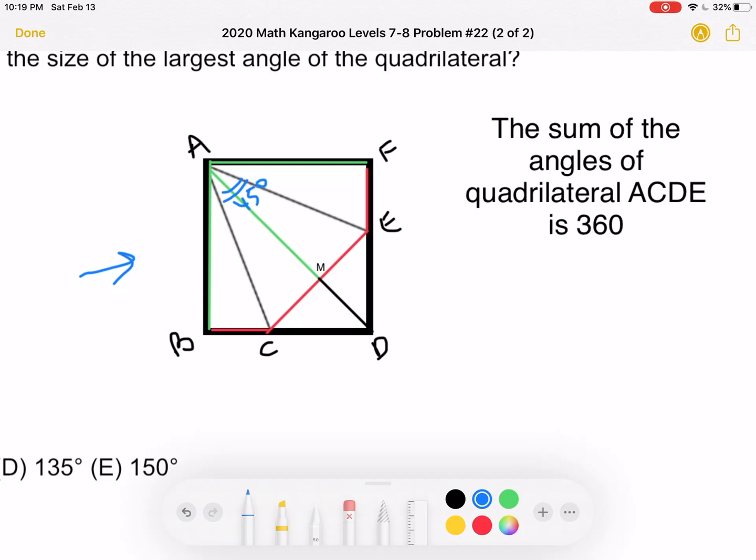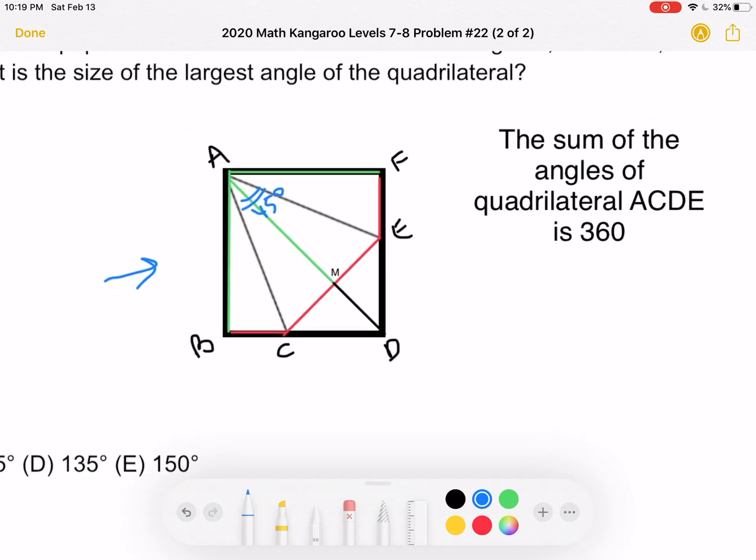Now, this is important because we're looking for the size of the largest angle of the quadrilateral. This angle right here, which is also equal to this angle right here, because, again, this is reflected over the diagonal. And we know that this is 90 degrees.